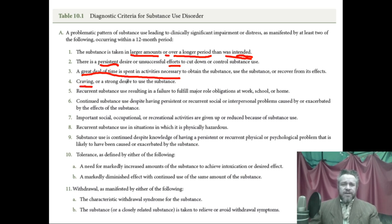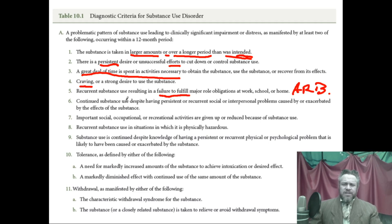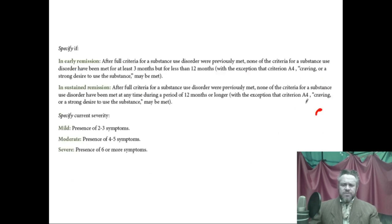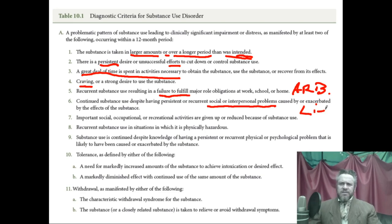Craving is one criterion — though how much should you want something before it's a craving? Recurrent use resulting in a failure to fulfill major role obligations is the 'work' criterion. Continued use despite persistent social or interpersonal problems is the 'relationships' criterion — the substance is messing up your relationships. People are giving up important social and occupational activities because now they are using substances, and they continue despite knowing it is a problem.